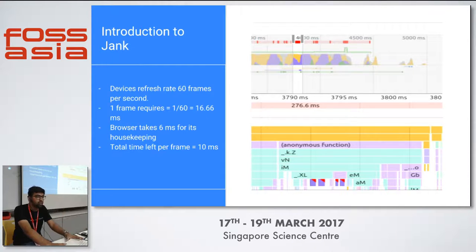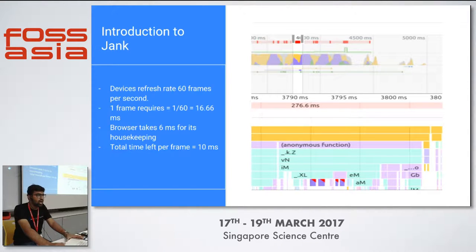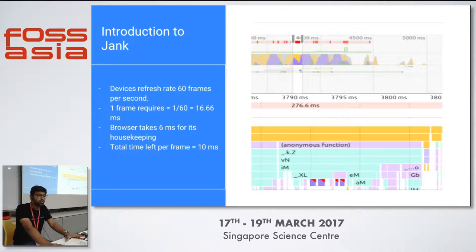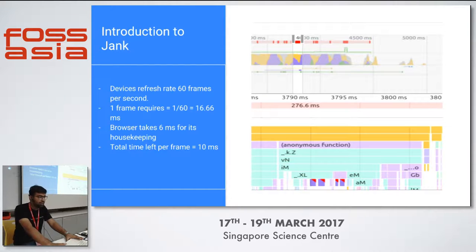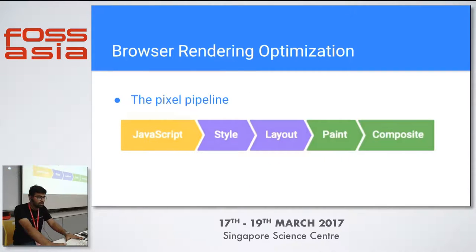So if your website has various images and you consider each image as a frame, you only have 10 milliseconds to load each image — which is very short. We had to figure out how to do this, because we faced the same challenge in the Open Event Web App. Here comes the pixel pipeline, which goes from JavaScript → Style → Layout → Paint → Composite. These are the five steps the browser takes whenever you load pages.